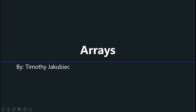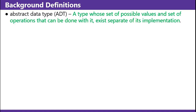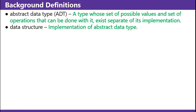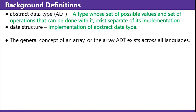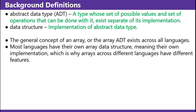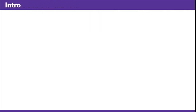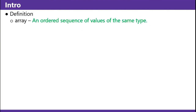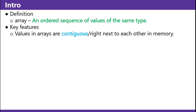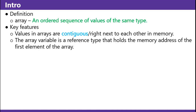Hello and welcome back to Jakubication. This is the next video in Chapter 0 entitled Arrays. Some background definitions. An abstract data type is a type whose set of possible values and operations that can be done with it exists separate of its implementation. A data structure is the implementation of an abstract data type. The general concept of an array — or the array ADT — exists across all languages. Most languages have their own array data structure, meaning their own implementation, which is why arrays across different languages have different features. The definition: an array is an ordered sequence of values of the same type. Key features: values in arrays are contiguous, or right next to each other in memory. The array variable is a reference type that holds the memory address of the first element of the array.